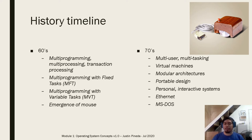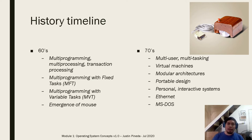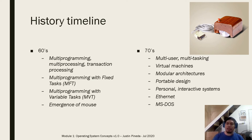In the 1960s, multi-programming, multi-processing, and transaction processing were introduced. When we say multi-programming, it means the memory or RAM can handle more than one process at a given time — with variations like multi-programming with fixed tasks and multi-programming with variable tasks, which we will cover in the memory management module. In the 60s, the emergence of the mouse also came. In the 70s, we already have multi-user, multi-tasking, virtual machines, modular architectures, portable design, personal interactive systems, the Ethernet, and MS-DOS.